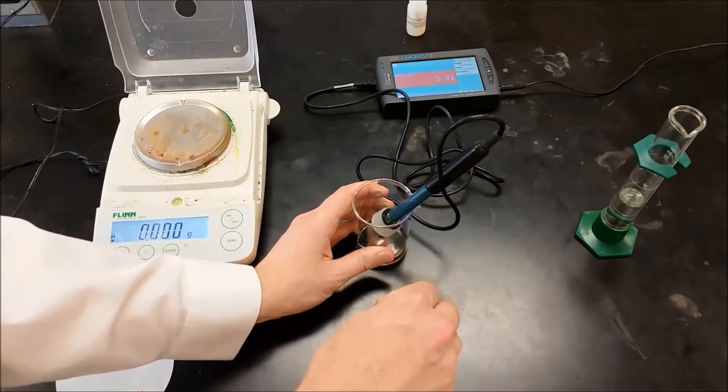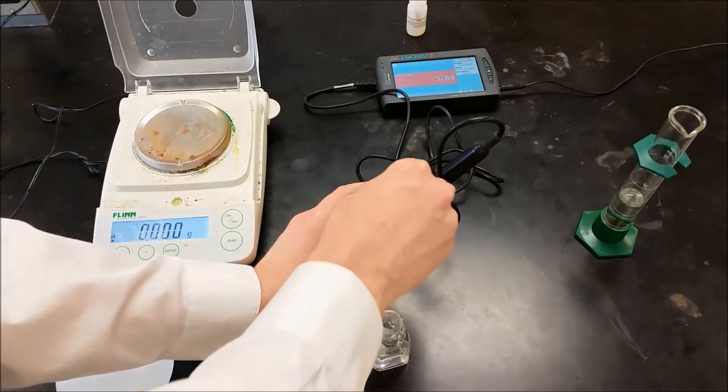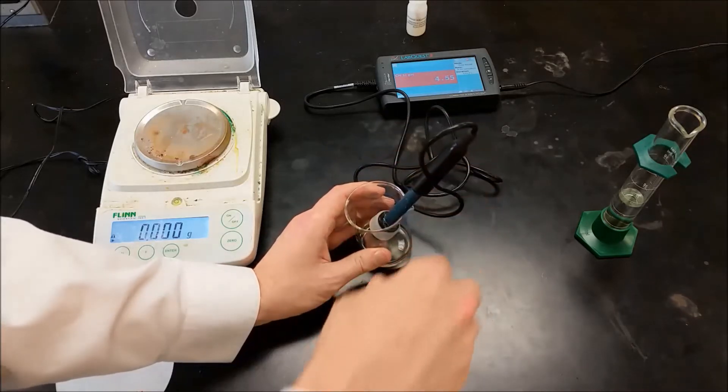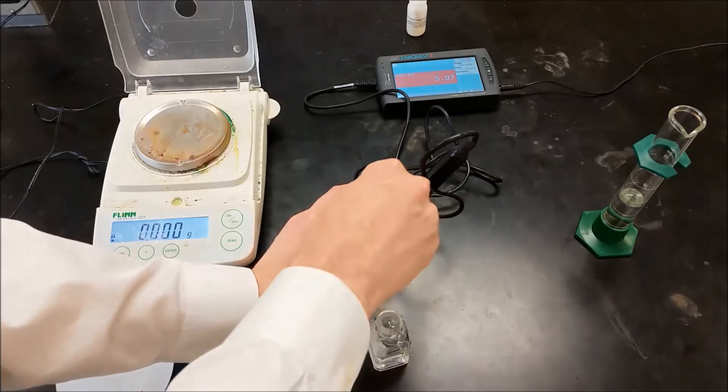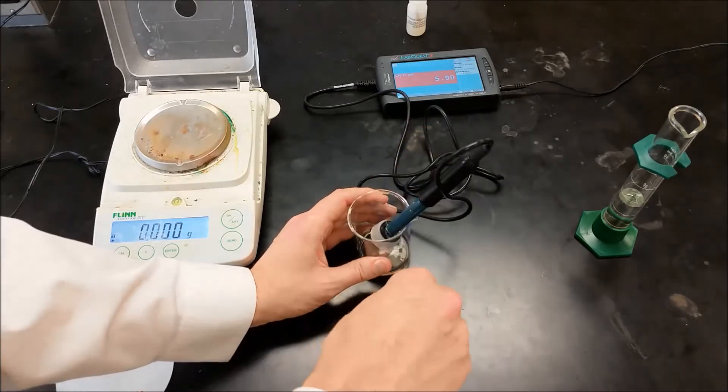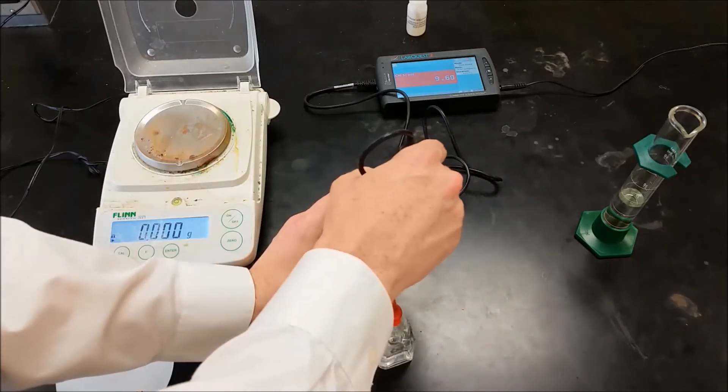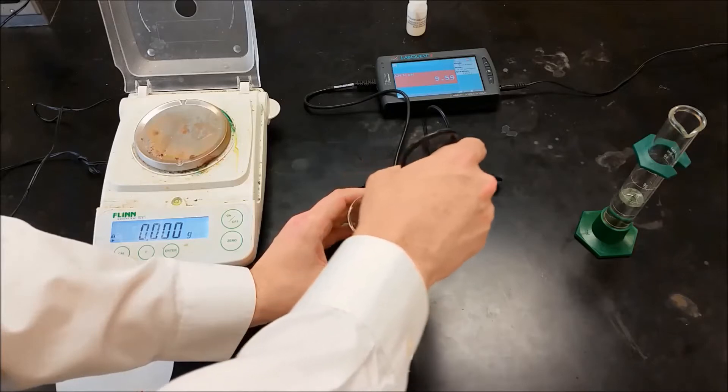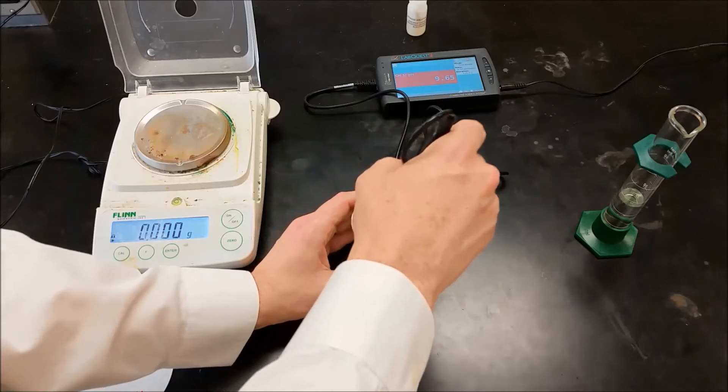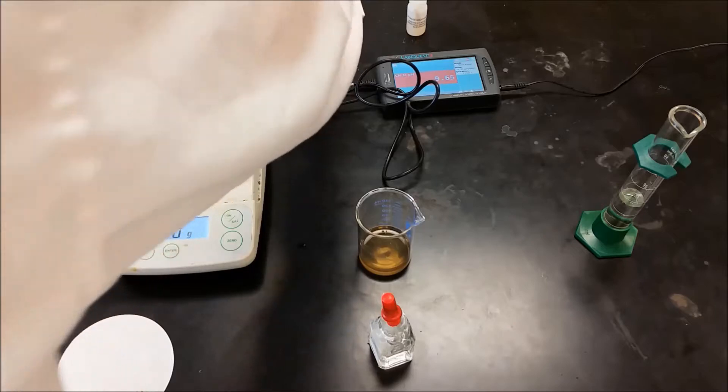So now we're going to add sodium hydroxide to this, get the pH to rise up. Alright, it looks like we're approaching a pH of 10. That should be good enough. So now we're going to take this out. Kind of done its job. Set it over there.